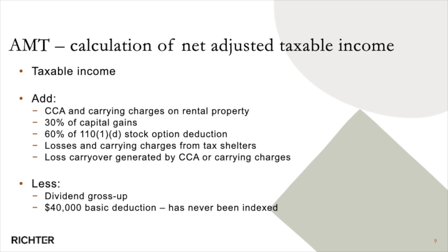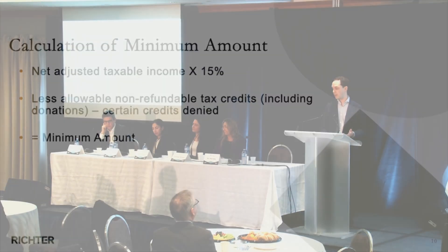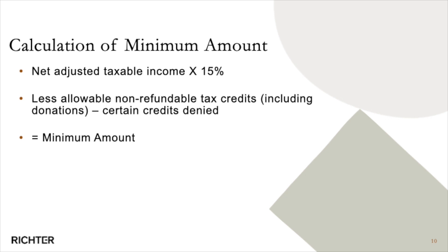Stock option benefits net of deductions are also at 80%, mimicking the capital gain inclusion. Then you remove losses and carrying charges from tax shelters, resource deductions, and then back out gross dividends — the gross-up on dividends — because AMT is taxed on dividends at the cash value. There is a $40,000 basic exemption that has never been indexed since the implementation of these rules back in 1986.